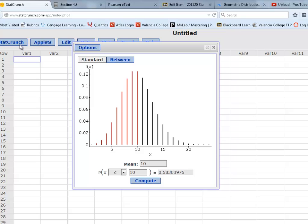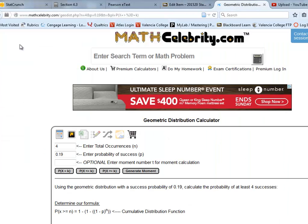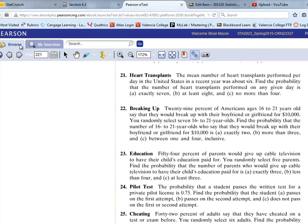Now, for this particular problem, let me flip back to the book. For this particular problem, part A says find the probability that we have exactly 7 heart transplants on a given day.